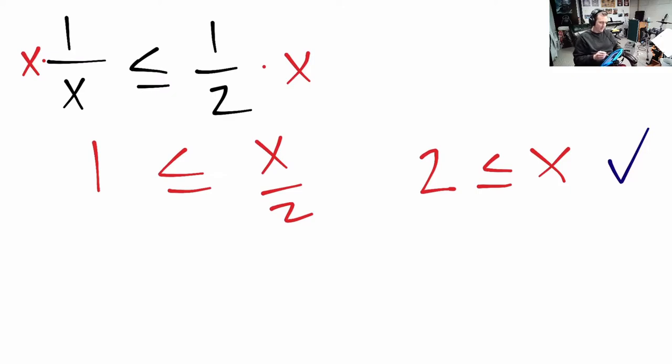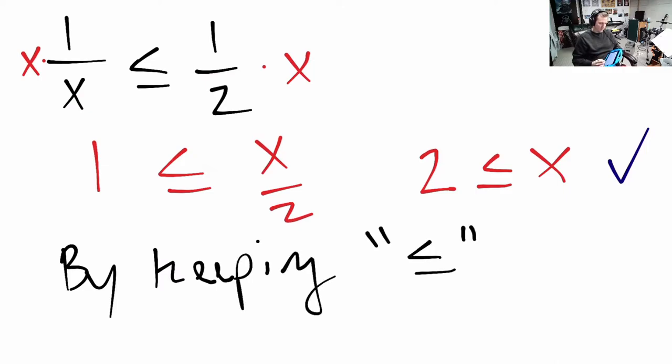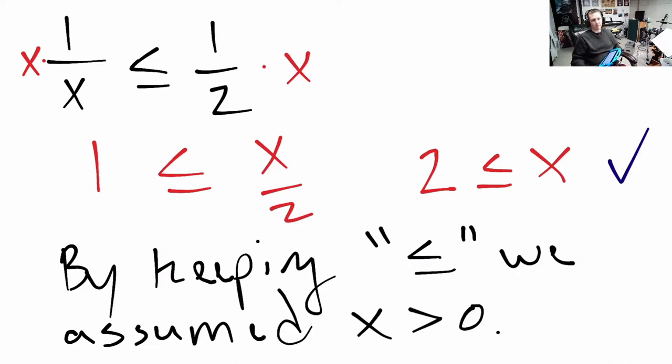You see, we inherently assumed something there. We assumed by keeping this symbol we assumed x was greater than 0. It's positive, right? But what if it's not? It's a variable to represent any real number.